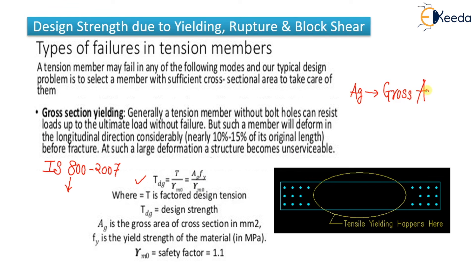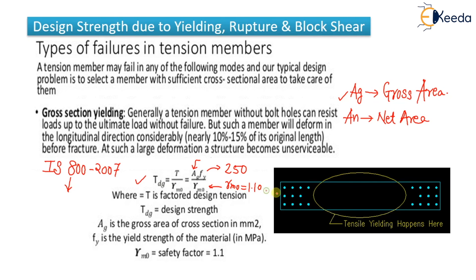Ag is the gross area — the total area without any deductions for bolt holes. We have two concepts: net area (An) and gross area (Ag). Ag means no deduction for bolt holes. fy is generally taken as 250 MPa, and γm0 is generally taken as 1.10.